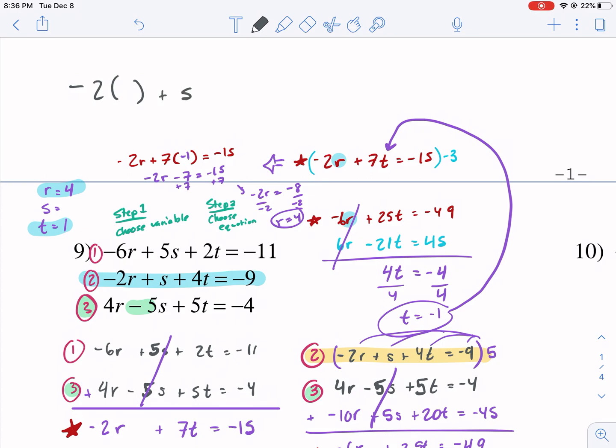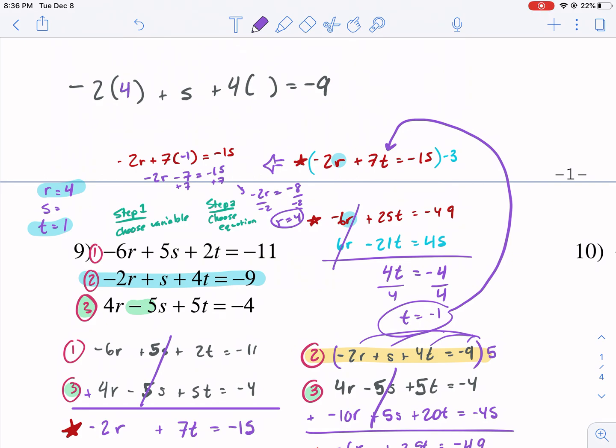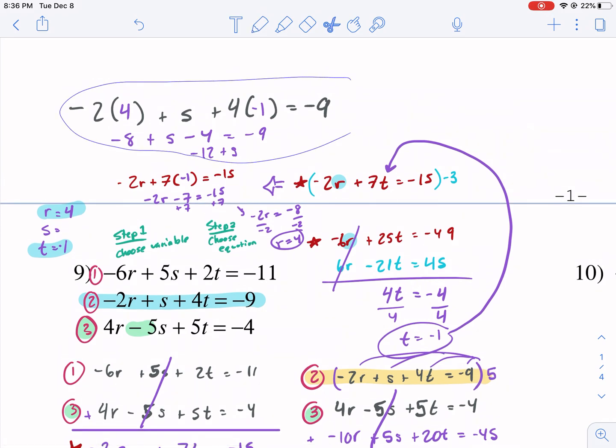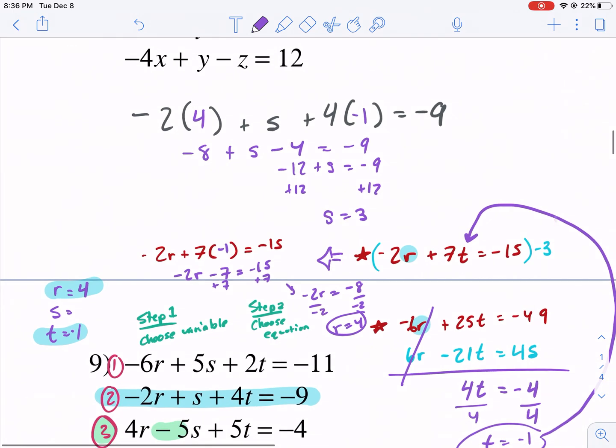So I'm going to rewrite this. Negative two R plus S. This is what I'm solving for. Plus four T equals negative nine. So let me go ahead and plug in my values. So I know this is four. I know this is negative one. Just checking. Even I make mistakes, folks. So then I get negative eight plus S minus four equals negative nine. Well, that's negative 12 plus S equals negative nine. I'm going to add 12 to both sides. And I get S equals positive three. And I'm done.